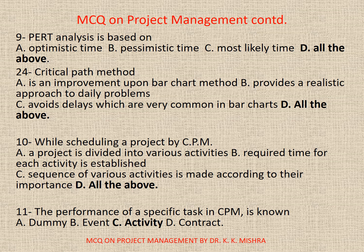Question 10: While scheduling a project by CPM — Options are: A. A project is divided into various activities; B. Required time for each activity is established; C. Sequence of various activities is made according to their importance; D. All the above. Correct option is D: All the above. Question 11: The performance of a specific task in CPM is known as — Options: A. Dummy; B. Event; C. Activity; D. Contract. Correct option is C: Activity.